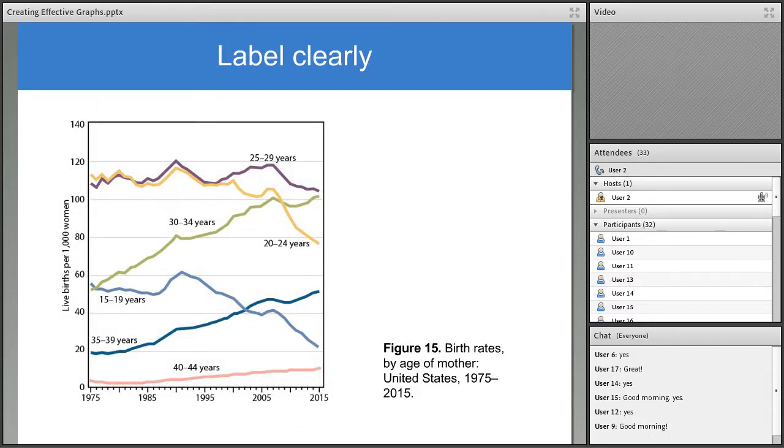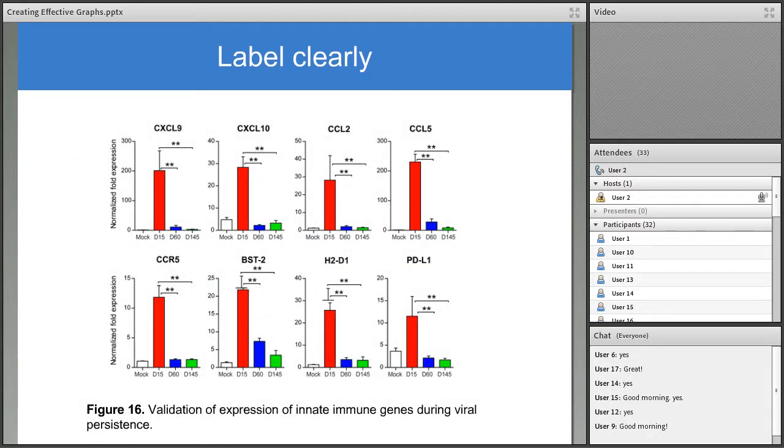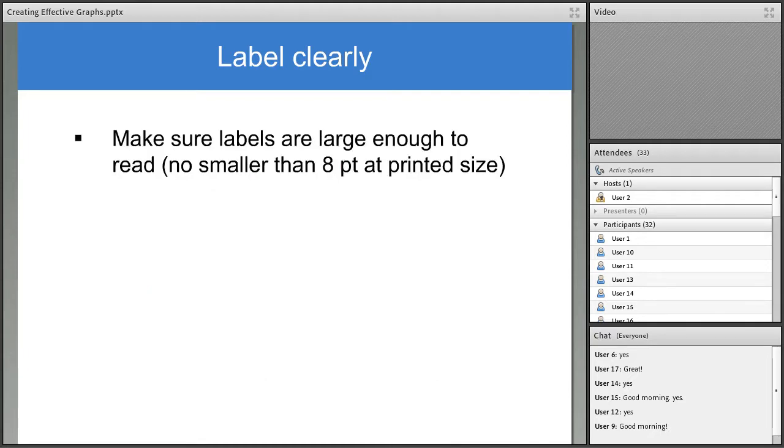An important element in effective graph design is labeling the graph so that readers can understand it easily. This is a graph of birth rates with individual curves representing age ranges of the mother from 1975 to 2015. These overlapping curves are distinguished from each other with color, and each curve is labeled directly instead of via a key. Putting information on the figure itself rather than in a key or in the figure legend makes it easier for readers. Titles are not usually needed over graphs. Prepare your title as a legend instead. The exception would be a figure composed of multiple similar graphs, with each graph showing a different disease site or cell line, molecule, etc. So here the authors have labeled the graphs with the names of genes so we can quickly tell which graph goes with which gene.